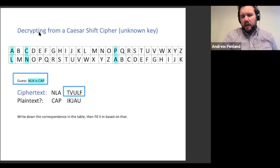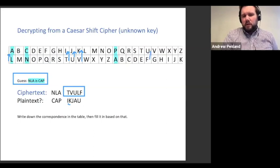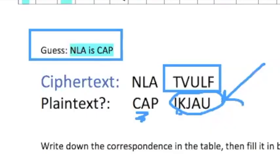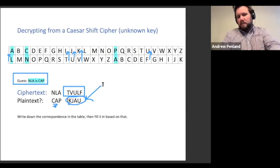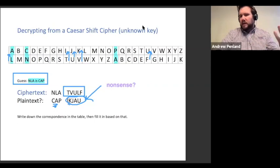When I go to decrypt T-V-U-L-F using this lookup table: T in my ciphertext reverse-engineers to I in my plaintext, V reverse-engineers to K, U reverse-engineers to J, L reverse-engineers to A, and F reverse-engineers to U. So the result would be I-K-J-A-U if C-A-P were actually the first word of the plaintext. And of course, this doesn't work. So unless this is some nonsense acronym I don't know, I don't think C-A-P is actually the right correspondence for N-L-A.